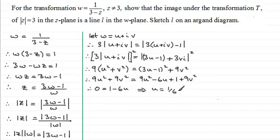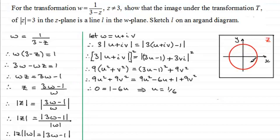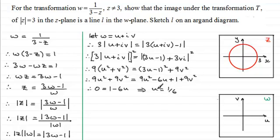So what has actually happened? We had the modulus of Z equals 3, which represents a circle of radius 3 units in the Z plane. Under the transformation W equals 1 over 3 minus Z, we get in the W plane the line L where U equals 1/6 — a vertical line at 1/6 on the real axis. It's interesting to follow how the locus of Z going around this circle links up to the movement of points along this line in the W plane.